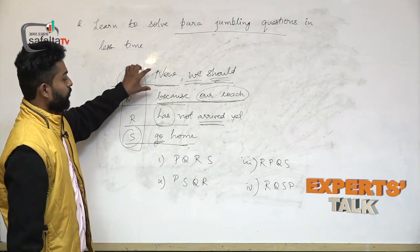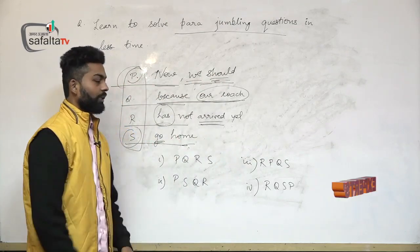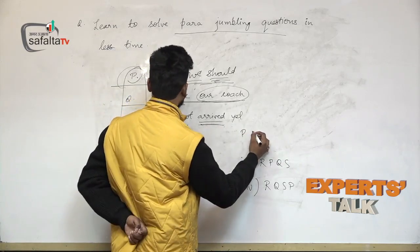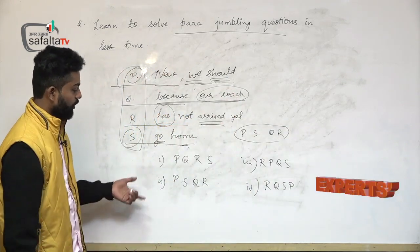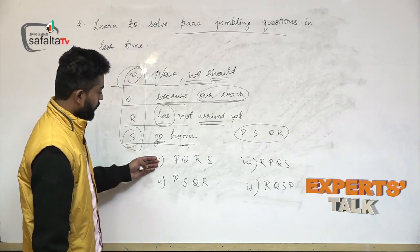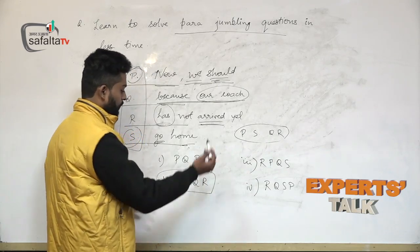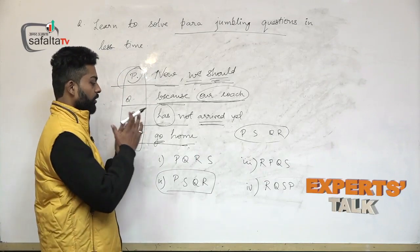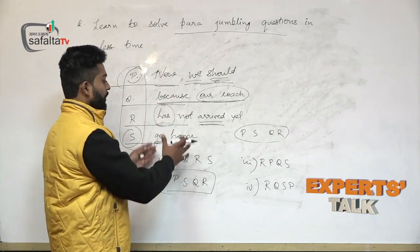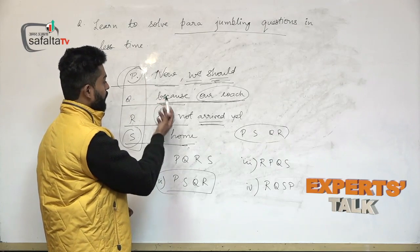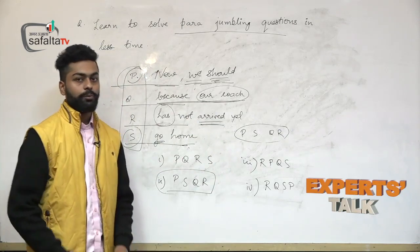When we solve this jumbled sentence part by part, we will easily get the correct option. According to our analysis, the correct option is PSQR. Now we check whether this appears in the options given below. The first option is PQRS — not our answer. The second is PSQR — yes, we have found the correct answer. The approach is: do not go to the options first; first read the sentence and try to complete it yourself. If you cannot get the answer that way, then go to the options for help.